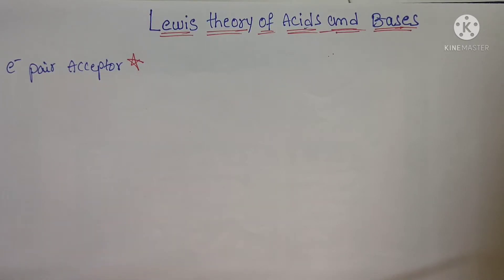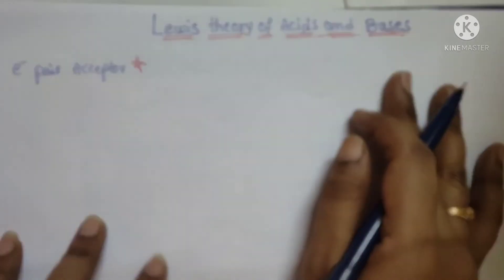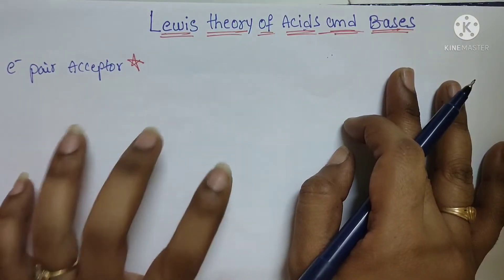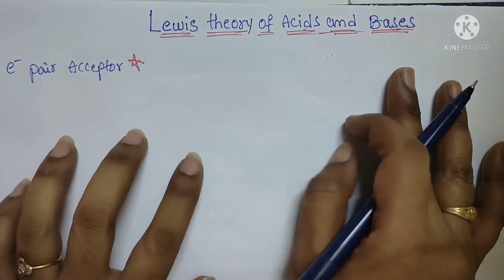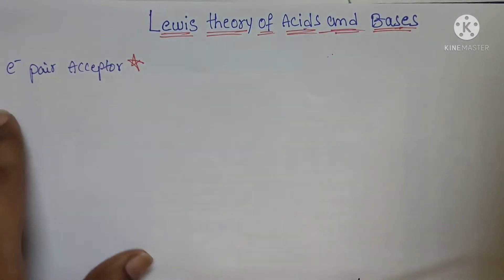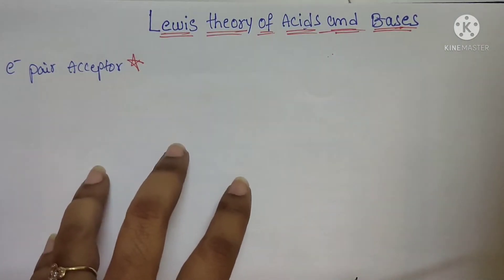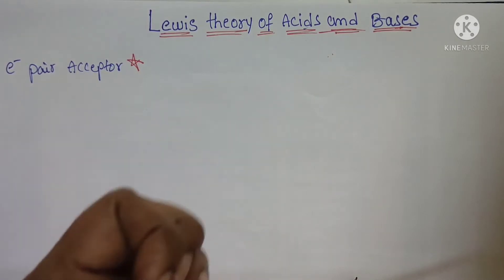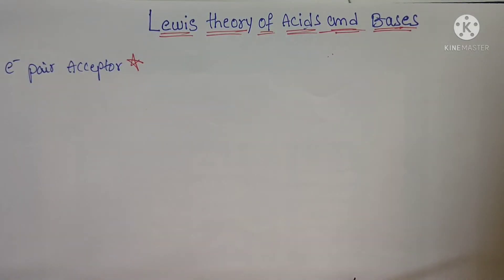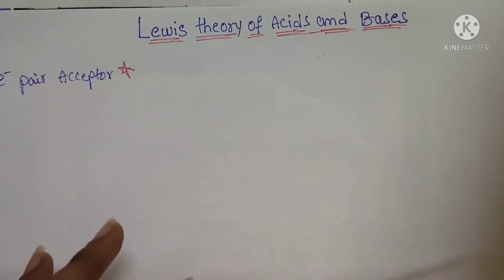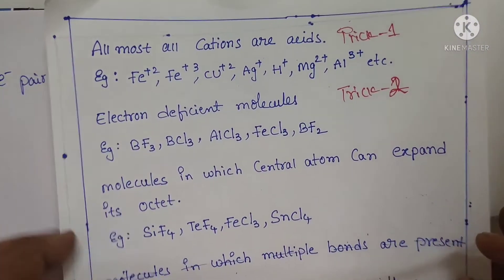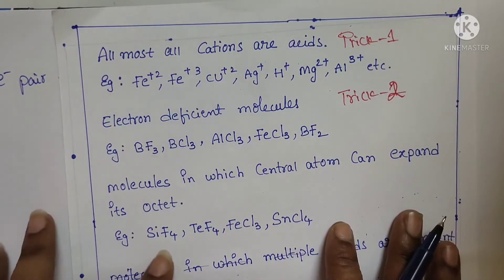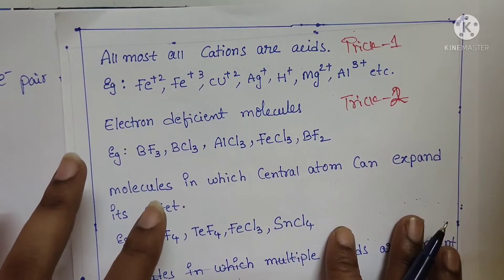First we will start with the definition. According to Lewis, acids are the electron pair acceptors. In today's session we will discuss only Lewis acids. If any compound can accept an electron pair, it acts as a Lewis acid. Remember this definition: electron pair acceptor acts as a Lewis acid.